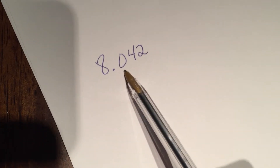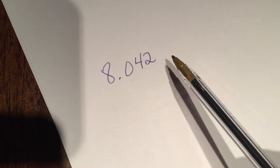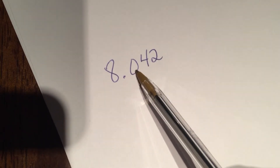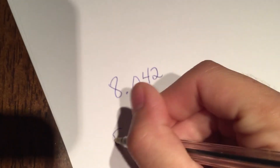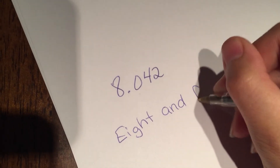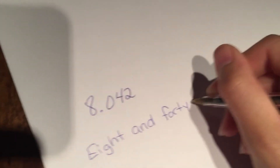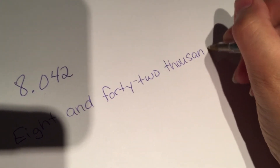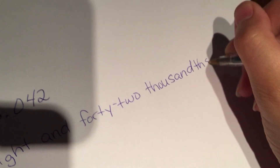Squeeze it in there. Another kind of problem you might see is when there's a 0 in the decimal. This actually makes it a lot easier. We say the whole number 8 and 42 thousandths — the 2 is in the thousandths place, so we kind of pretend like the 0 is not even there: 8 and 42 thousandths.